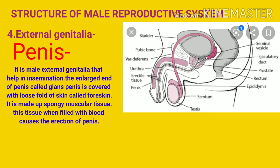The fourth part is external genitalia, or the penis. The penis is the male external genitalia that helps in insemination. The enlarged end of the penis is called the glans penis, which is covered with a loose fold of skin called the foreskin. The penis is made up of spongy muscular tissue. This tissue, when filled with blood, causes erection of the penis. In this way we can understand the structure of the male reproductive system.